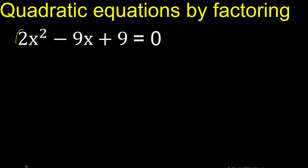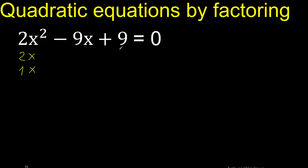2 numbers that multiply is 2. 2 multiplied by 1 is 2. x multiplied by x is x squared. Here 9: 2 numbers that multiply is 9. 9 multiplied by 1 is 9, or 3 multiplied by 3 is 9. Let's try plus.